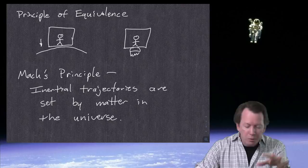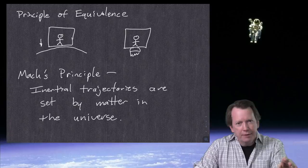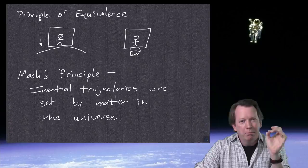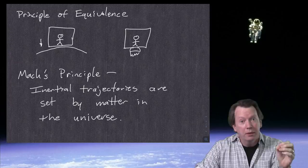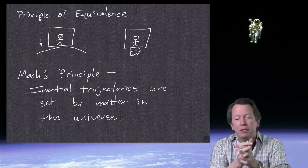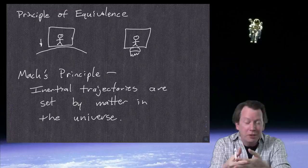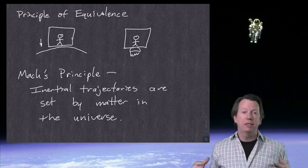It's curious that there is no preferred place in the universe, no preferred velocity, but there is a preferred acceleration. There are trajectories of constant acceleration, and some of them are different from others — they're all noticeable. You can tell in this box whether you are accelerated or not, and whether you are on an unaccelerated, inertial trajectory.